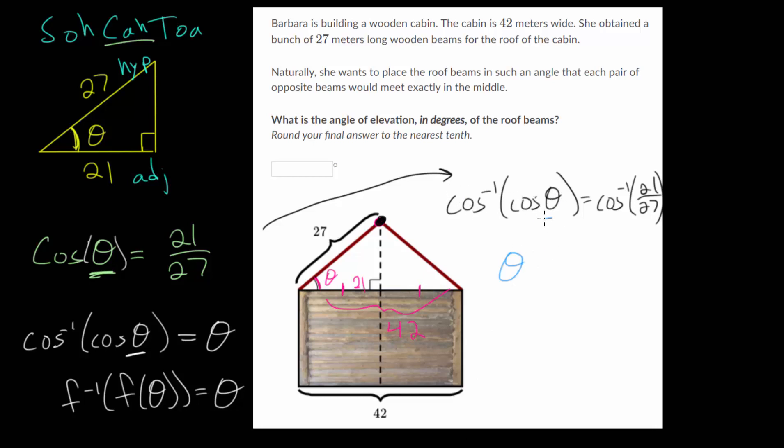and we just get theta, whatever your independent variable is. And so theta would be equal to the inverse cosine of 21 over 27. And this we can actually put into our calculator to find that missing angle.